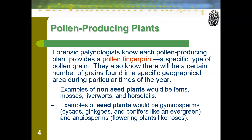Forensic paleontologists know that each pollen-producing plant provides what we call a pollen fingerprint — a specific type of pollen grain. They also know there will be a certain number of grains found in a specific geographic area during a particular time of year. Pollen fingerprints do not remain constant over time; the pollen fingerprint of a plant in October is going to be different than that plant in April. By analyzing what is at our crime scene, we might be able to tell when or where something occurred.